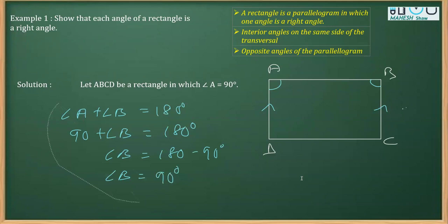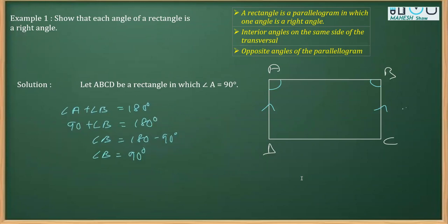So, once we got the value of B as 90 degree, what we can say further that opposite angles of parallelogram are equal. So, therefore, we can say that angle A is equal to angle C because these are opposite angles and A being 90 degree. So, I can say that C is also 90 degree.